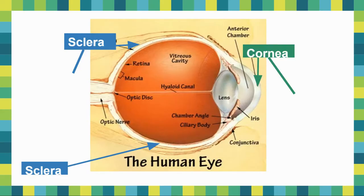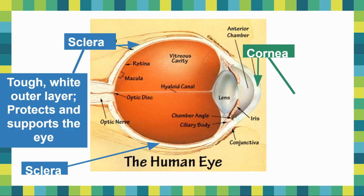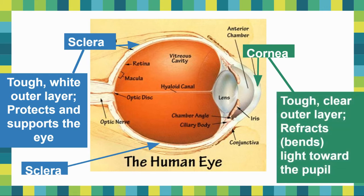Now I want to go through each of the functions starting with the sclera and the cornea. Here's another picture of the human eye with slightly different language, but the structures are important. The sclera is the tough white outer layer that protects and supports your eye — it's the whites of your eye. The cornea is on the front side; it's the tough outer layer that refracts, or bends, light and pushes it towards the pupil to enter into your eye.